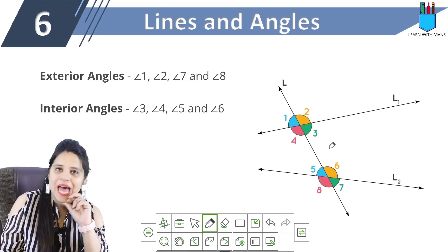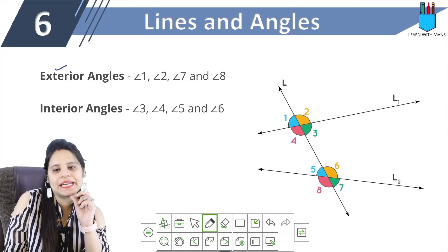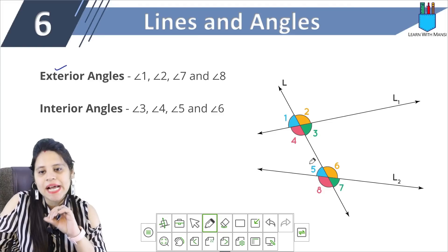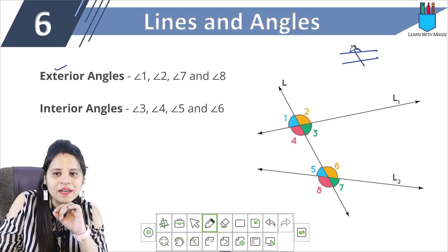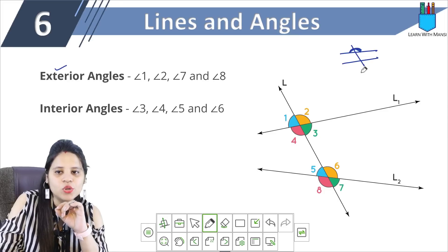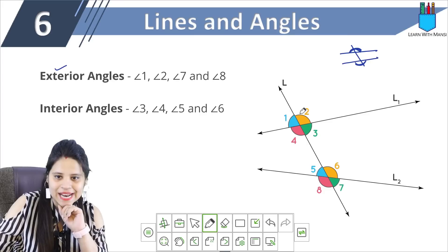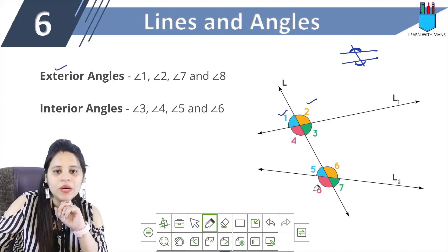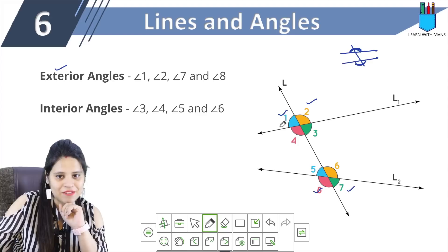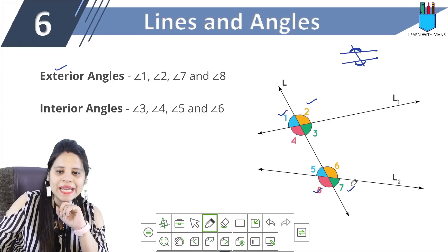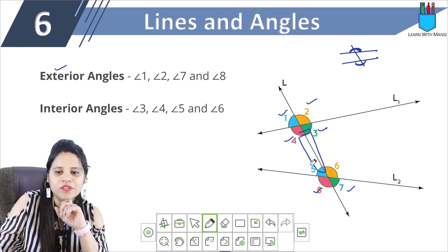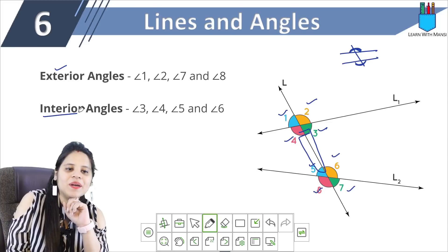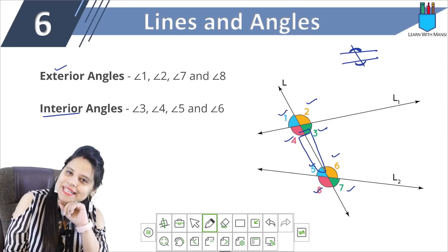Now let's understand some angles. Exterior angles: there are two lines and a transversal cuts them. Outside the two lines, angles are formed — these are exterior angles. Angle 1, angle 2, angle 8, and angle 7 are exterior angles. And the angles formed from inside between the two lines — angle 4, angle 3, angle 5, and angle 6 — these are interior angles.